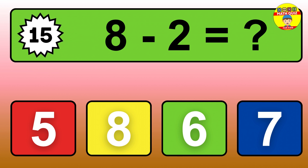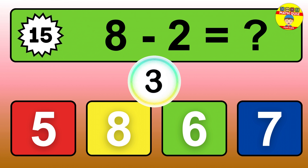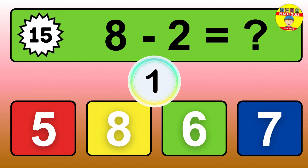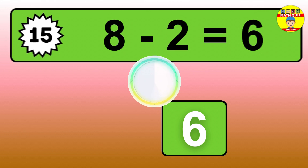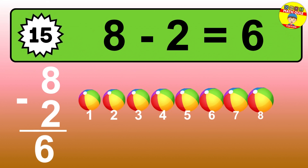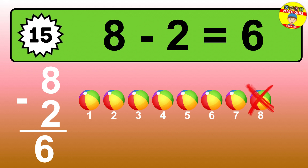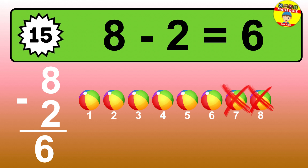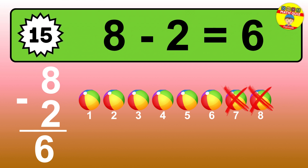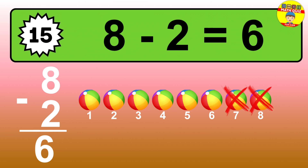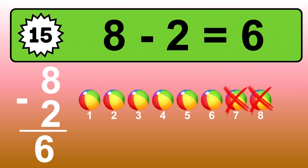Question fifteen: eight minus two equals what? So the answer is, eight minus two is six. Let's count it. One, two, three, four, five, six.